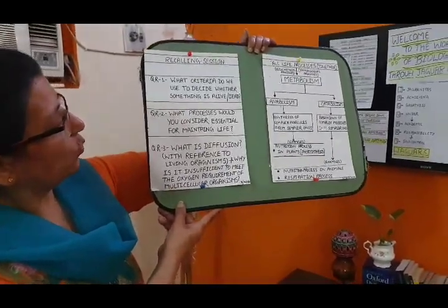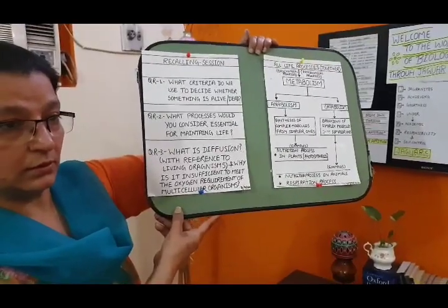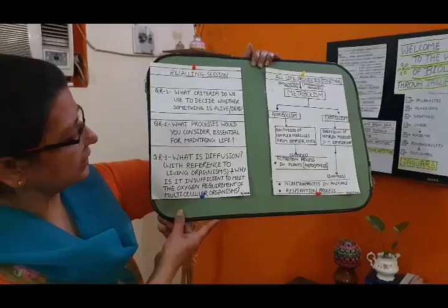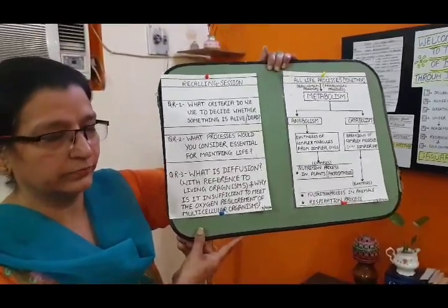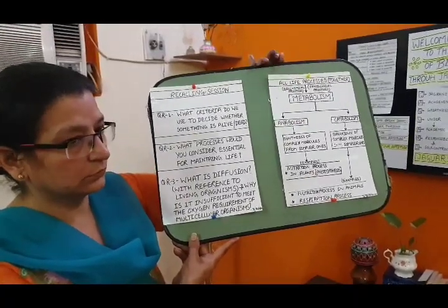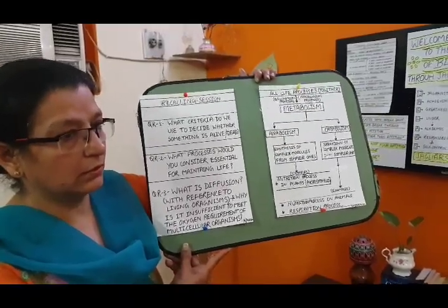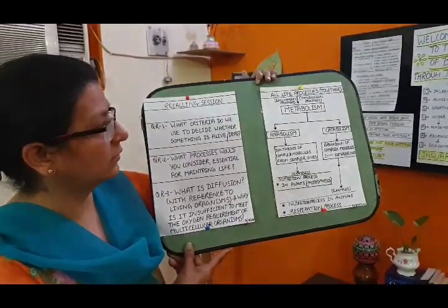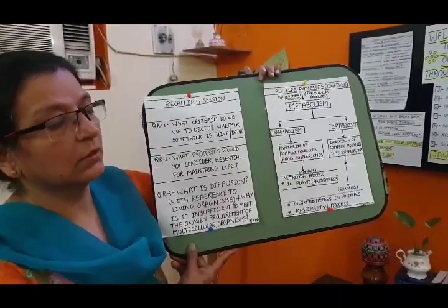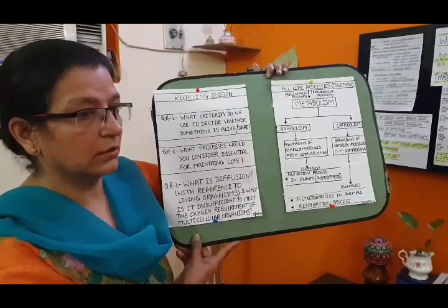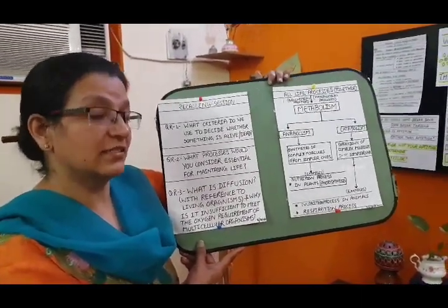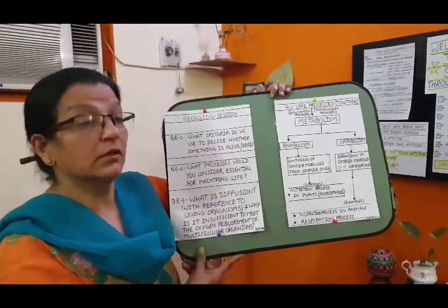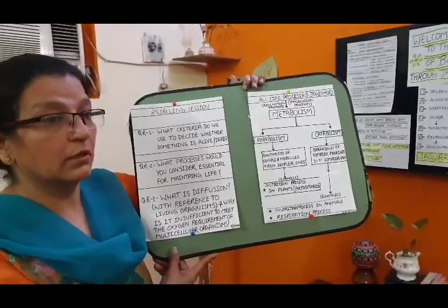My third question is: what is diffusion? Diffusion is the movement of molecules from a high concentration region to a lower concentration. Now, why is diffusion insufficient to meet the oxygen requirement of a multicellular organism compared to a unicellular one? In a unicellular organism, the single cell is in contact with the surrounding environment. But in multicellular organisms, not all cells are in contact with the environment, which prevents oxygen transport through diffusion to all cells — it is restricted to outer cells only. It is estimated that it would take 3 years for an oxygen molecule to reach our toes from our lungs through diffusion.